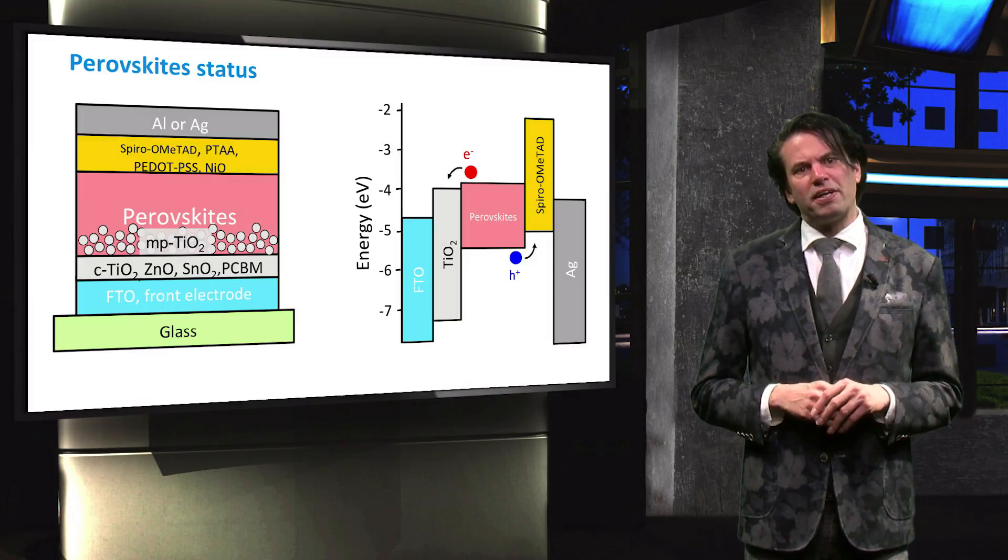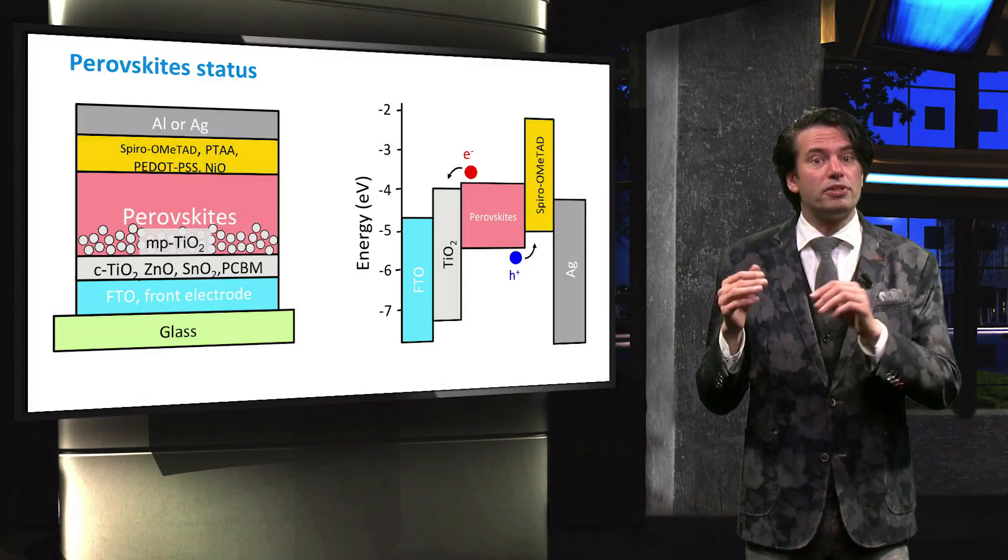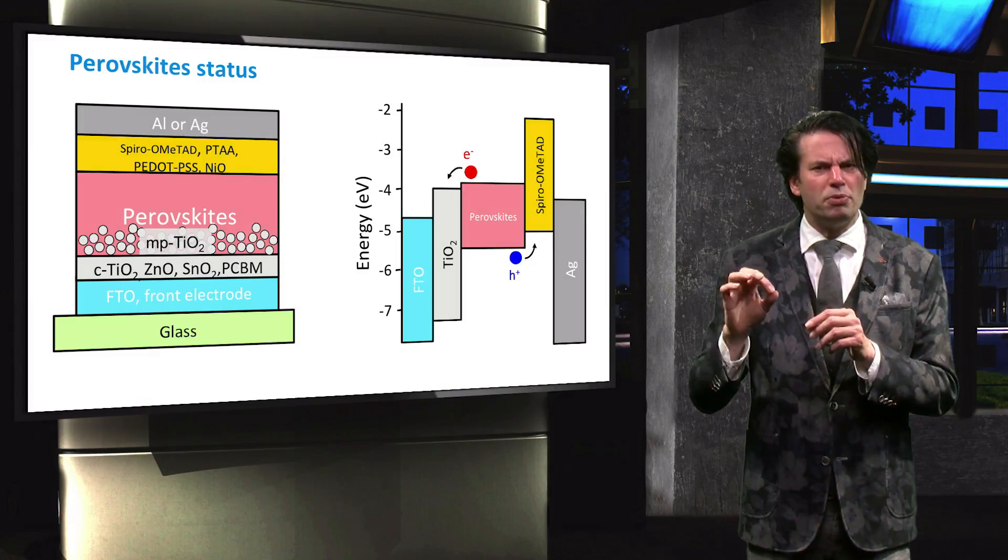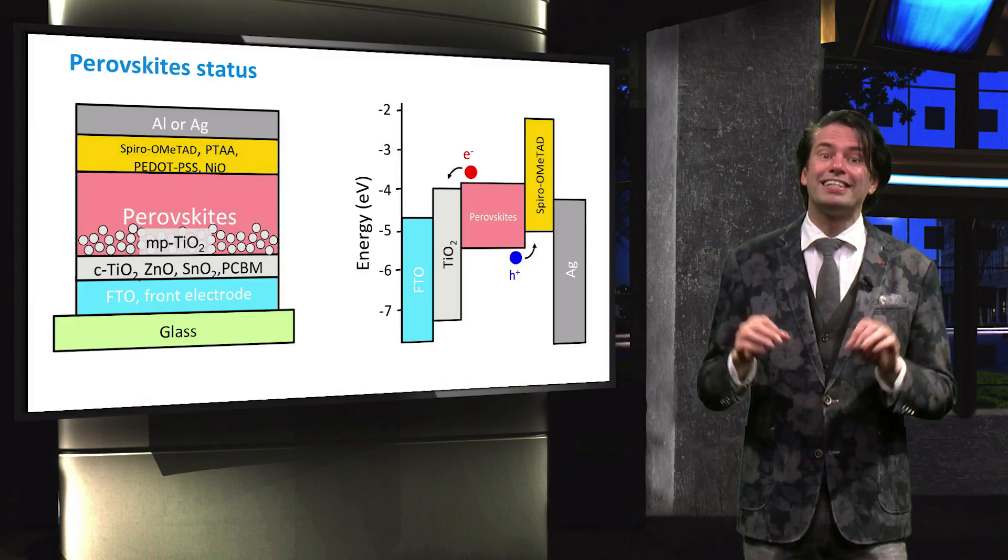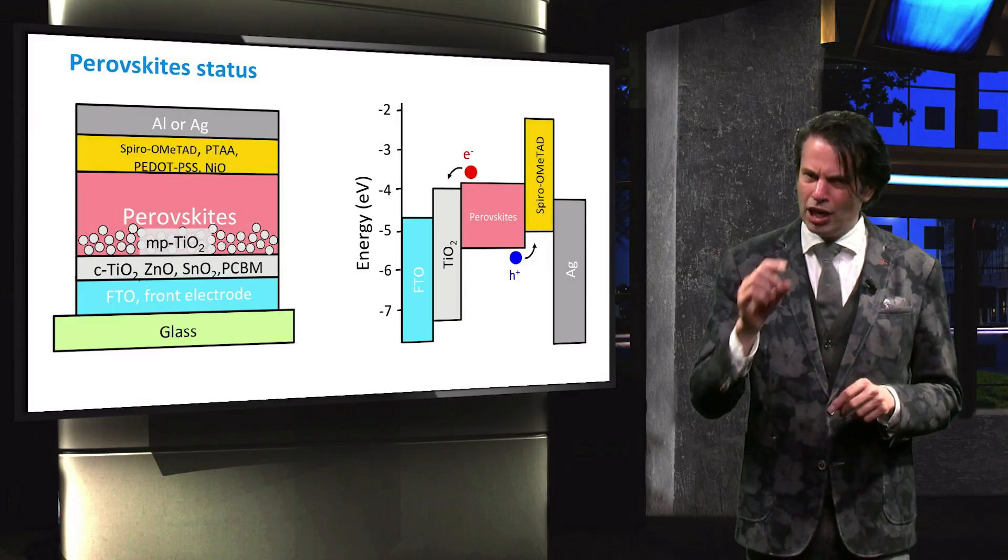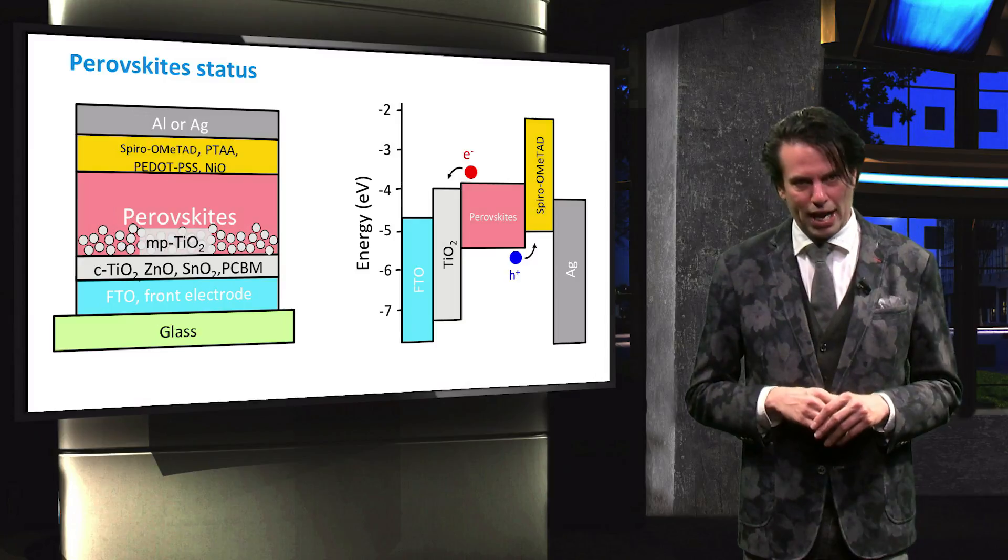Another interesting application of the halide perovskites is that they are being explored as a potential top junction in combination with a crystalline silicon bottom junction in a high-efficient tandem solar cell. We will discuss the hybrid structures in the last week of PV2X.